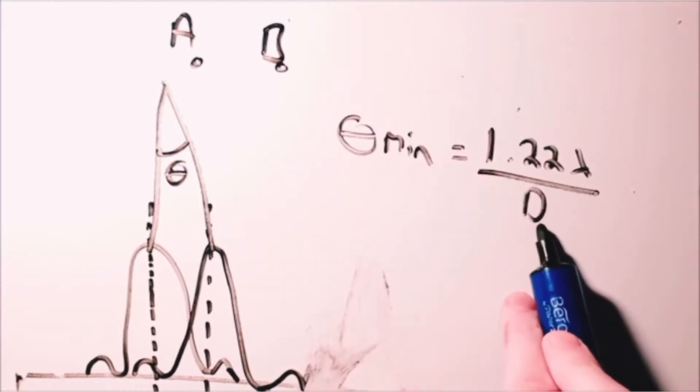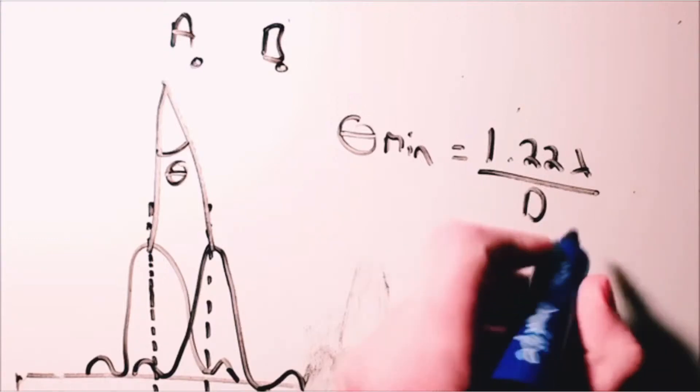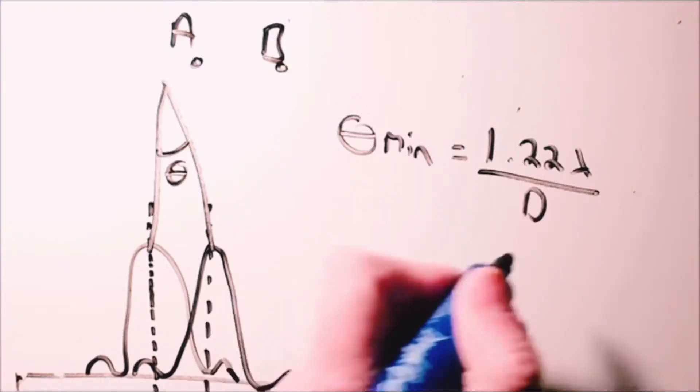So 1.22 lambda divided by D, which is the diameter of the aperture of the camera or your eye. Now what that means is what we already all know.